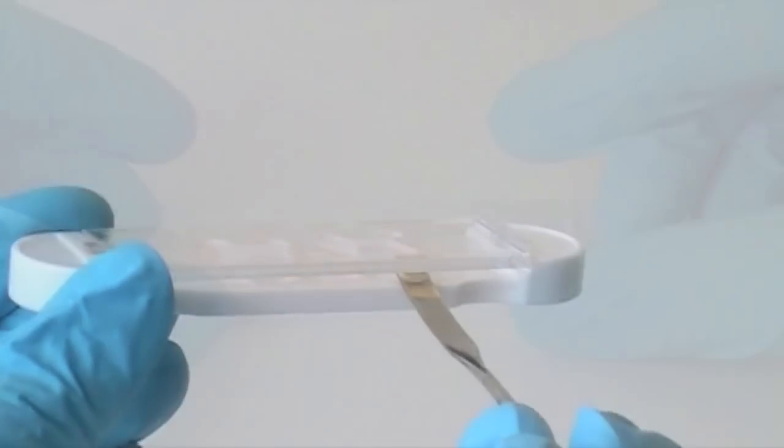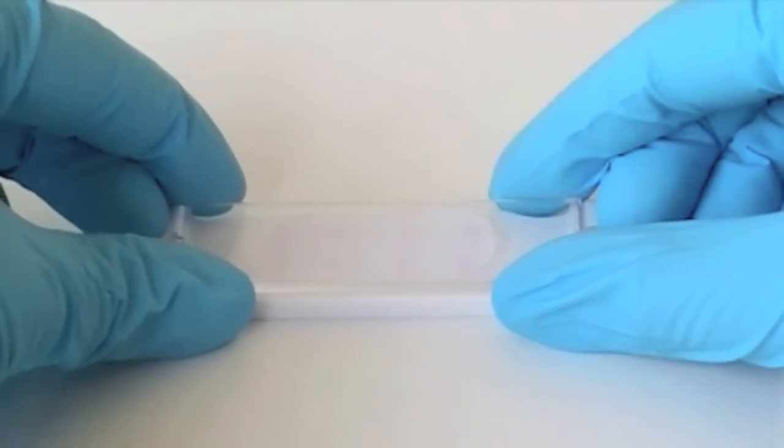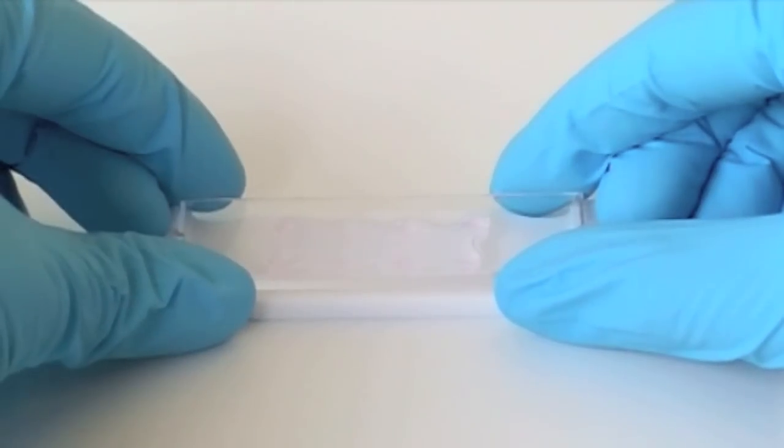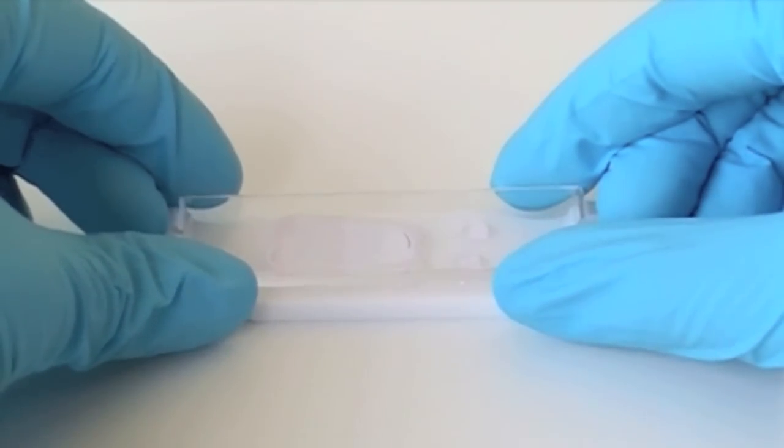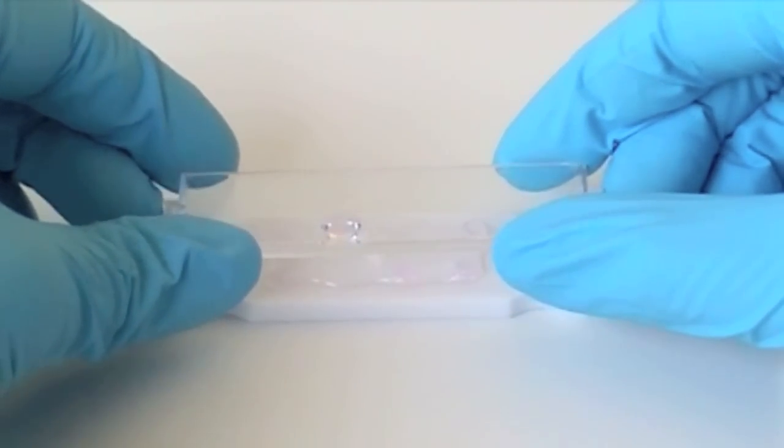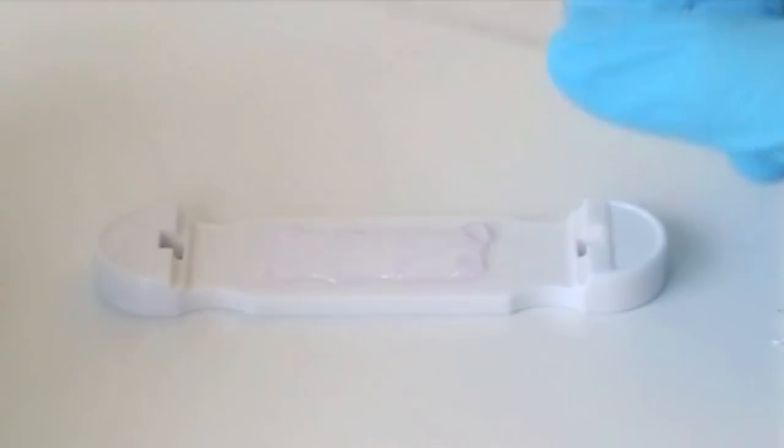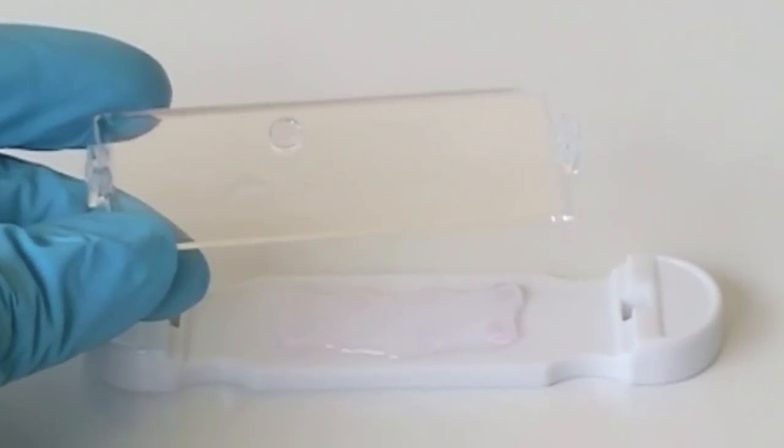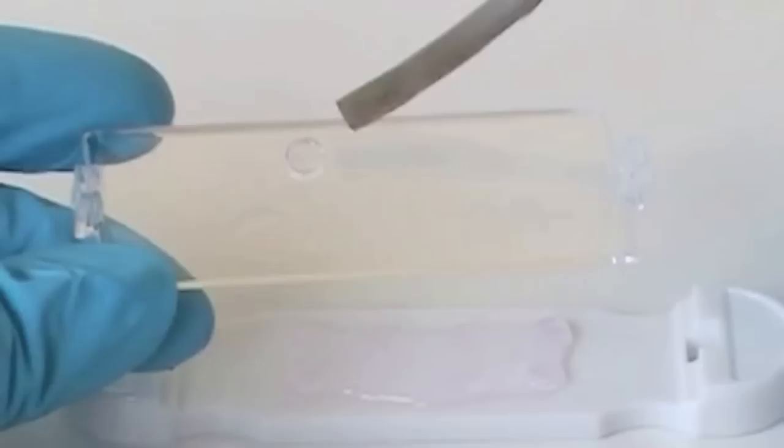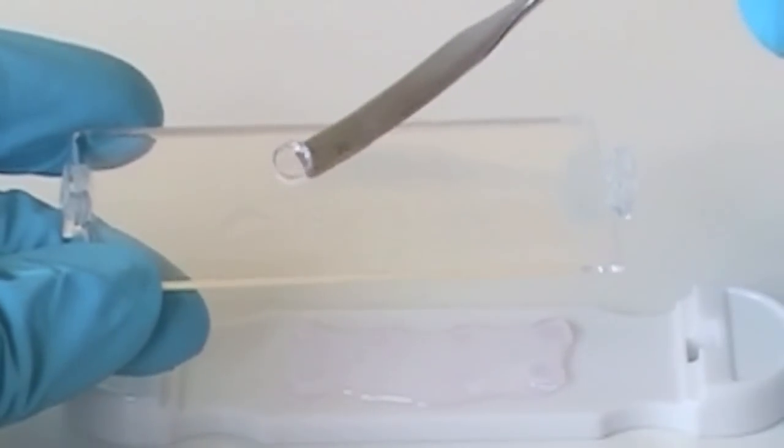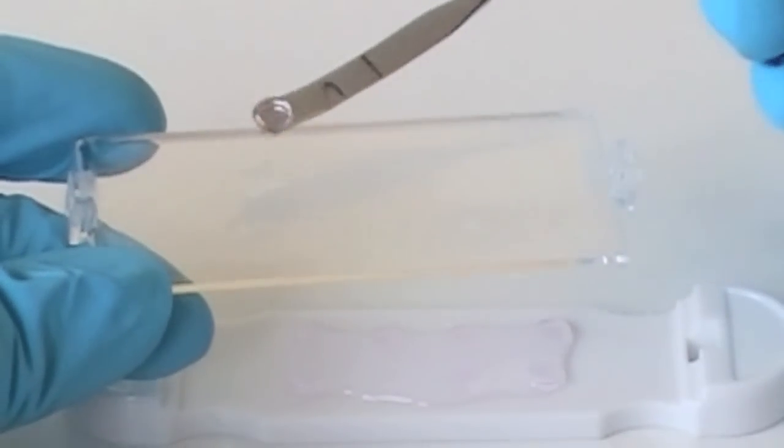Now, the caster can be opened slowly and the disc can be released. Sometimes, it happens that a disc adheres to the top part of the caster. This is not a problem. It can be transferred as every other disc in a well plate with the help of a spatula.